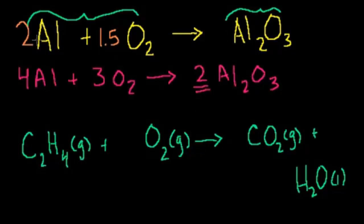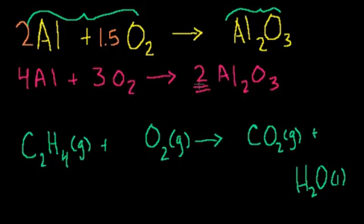So what did we do? We looked at the aluminum and said we need two aluminums to have both sides equal to 2. Then when we looked at oxygen, we said if I multiply this by 1 and a half, that becomes 3 oxygens on both sides. Then since we can't have 1 and a half, we multiplied both sides by 2, ending up with 4 aluminums plus 3 oxygen molecules — or 6 oxygen atoms — yielding 2 molecules of aluminum oxide.